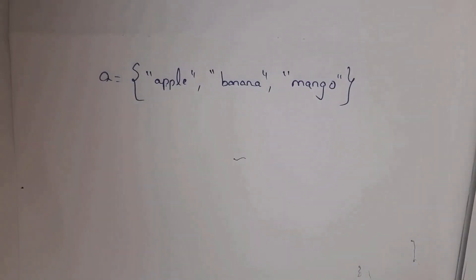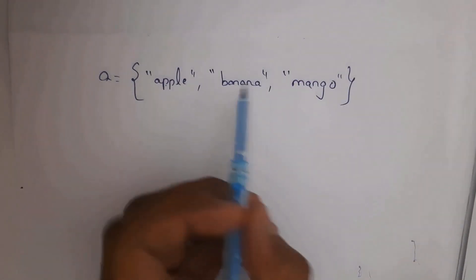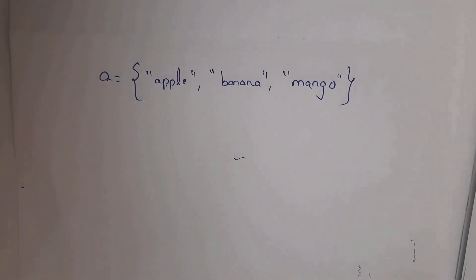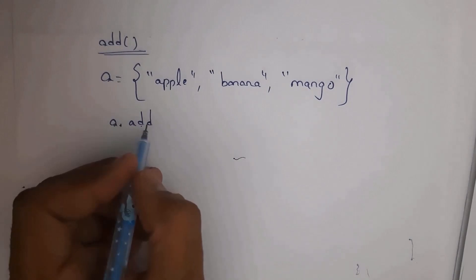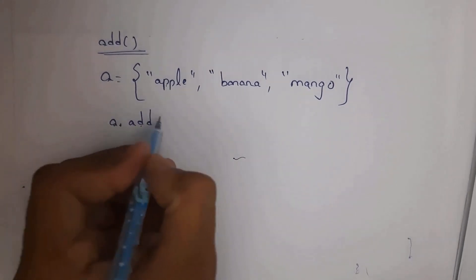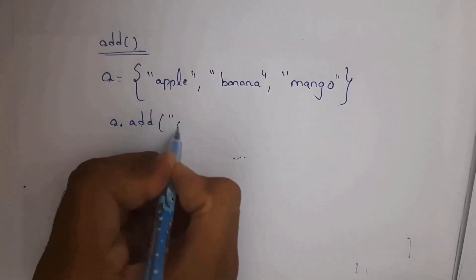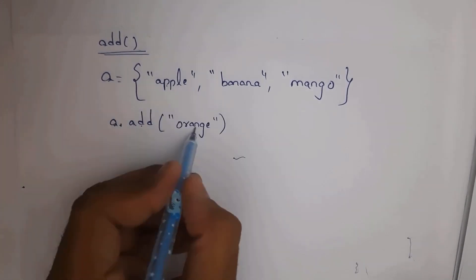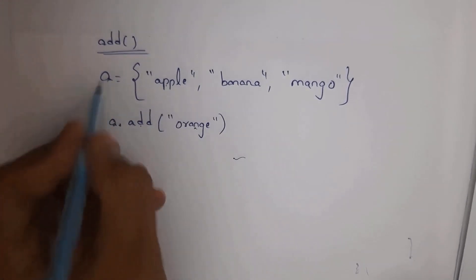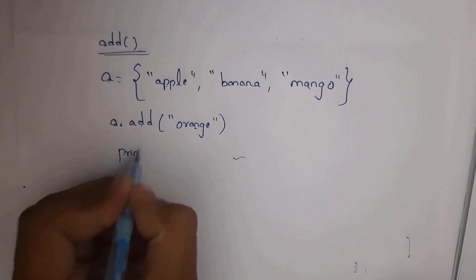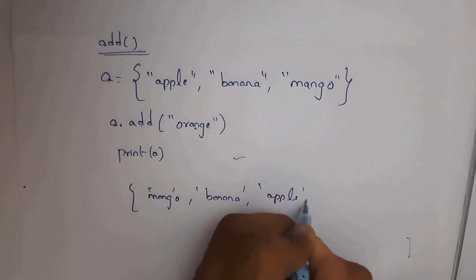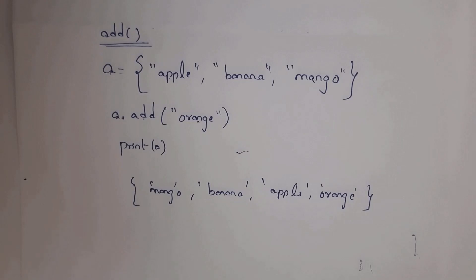Once we create a set we cannot perform any changes, but we can add and delete items. For example, this set contains 3 items: apple, banana, and mango. Now I want to add one more item — orange. So just write a.add('orange'). By using the add method, you can add an item. Now orange is added to a, so whenever you write print(a), you will get output mango, banana, apple, orange.